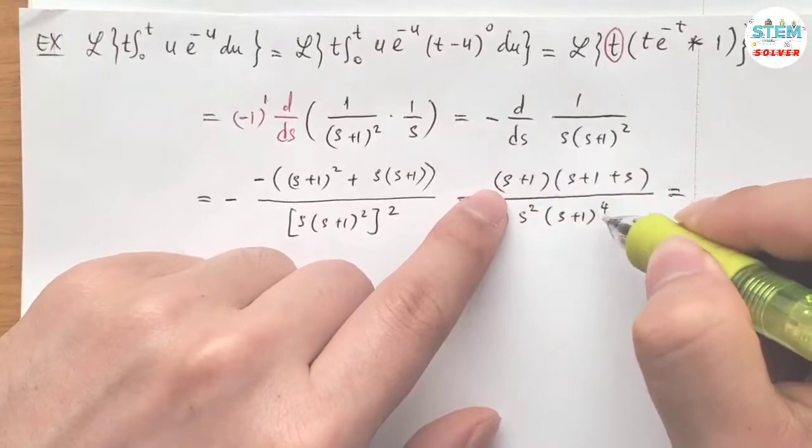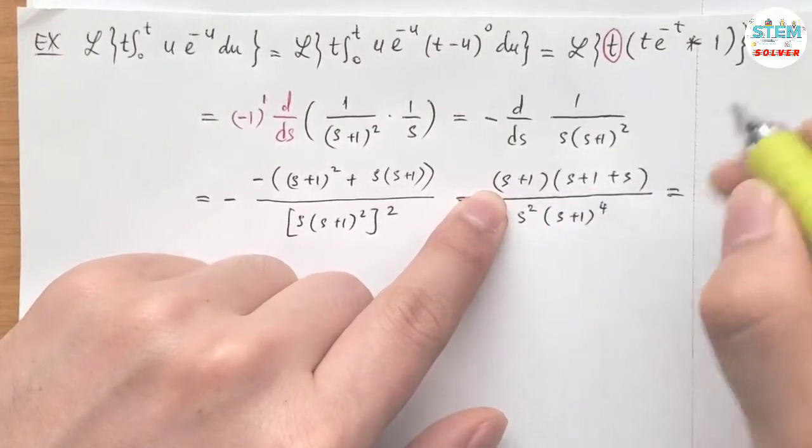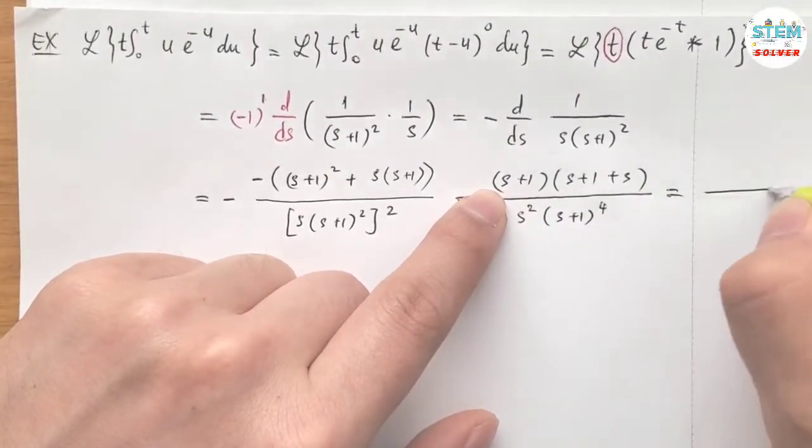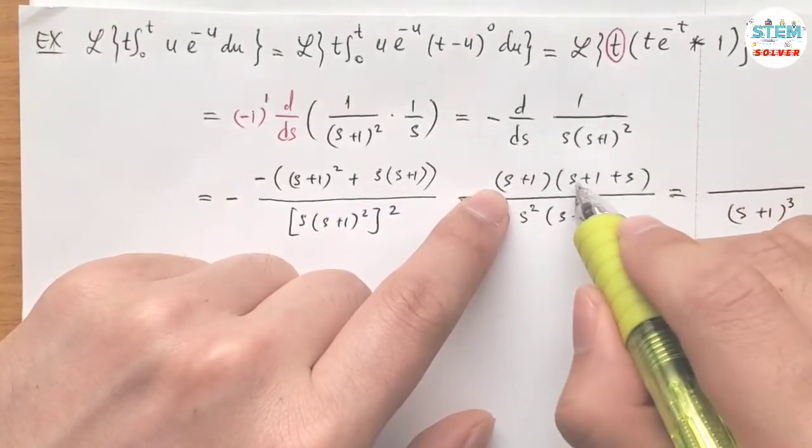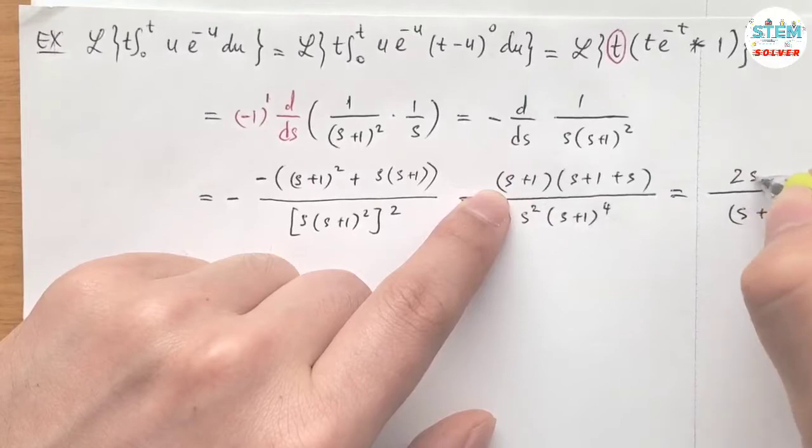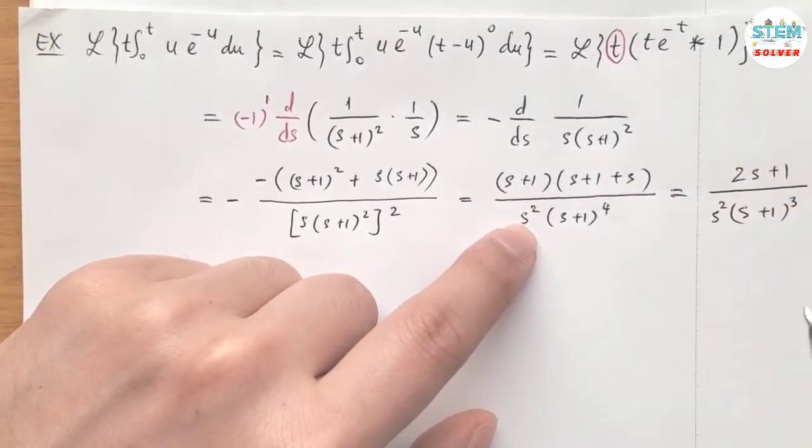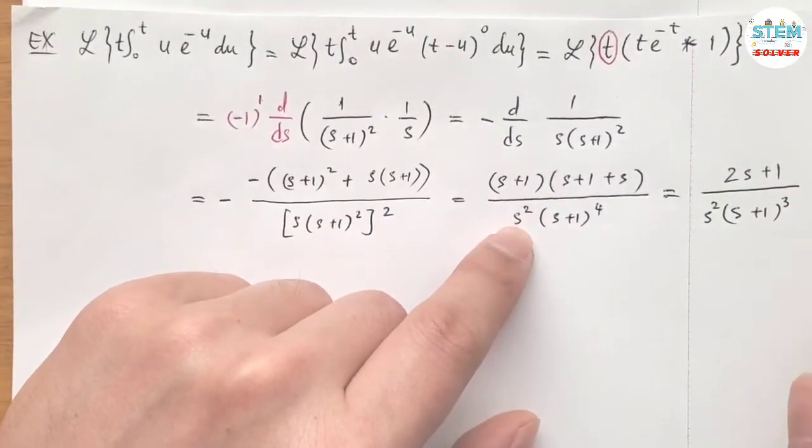Now simplify this s plus 1 on top and the bottom cancel out. So I'm left with s plus 1 cubed. Now this one 2s plus 1, and s squared on the bottom. So your final solution is.